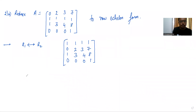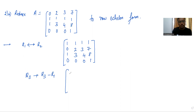Now we apply the row operation R3 changes to R3 minus R1. We get: 1, 1, 1, 1 / 0, 2, 3, 7 / and 1 minus 1 is 0, 3 minus 1 is 2, giving the updated third row.